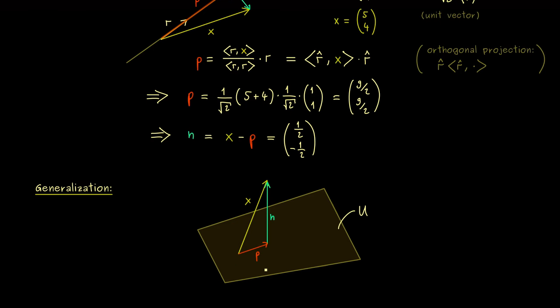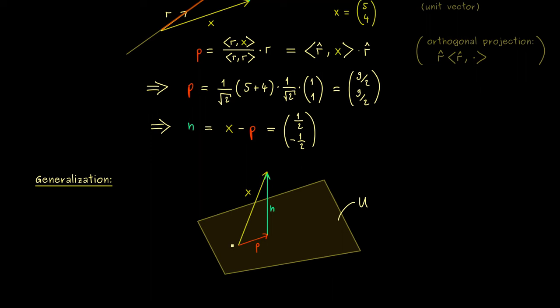However, if it's a finite dimensional subspace, we know that we can describe the whole subspace with finitely many independent directions.